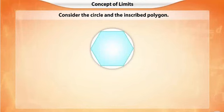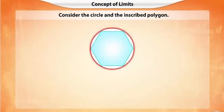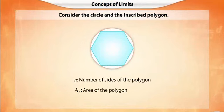Look at the circle and the polygon inscribed in the circle. It can be seen that the area of the polygon is less than the area of the circle. Let AP represent the area of the polygon with N sides and let AC represent the area of the circle.